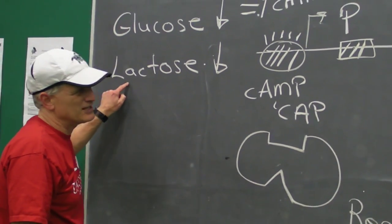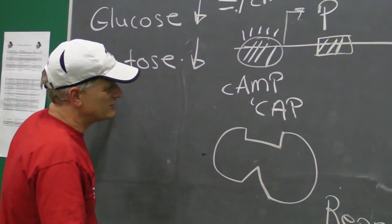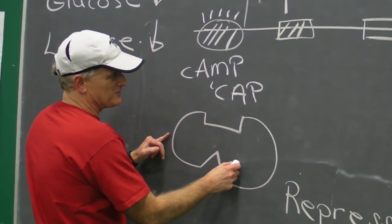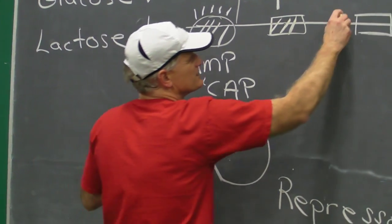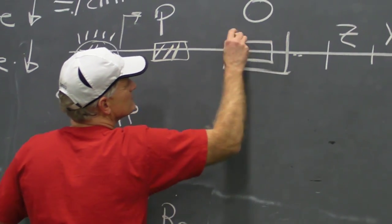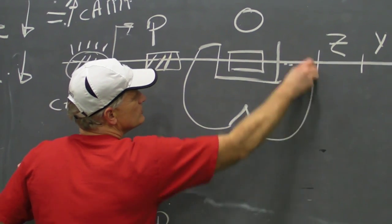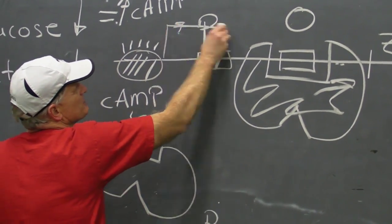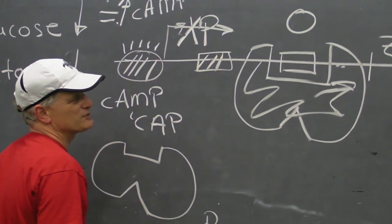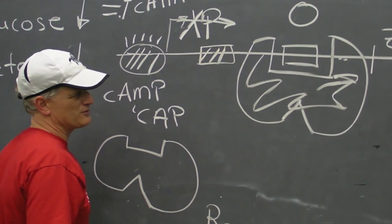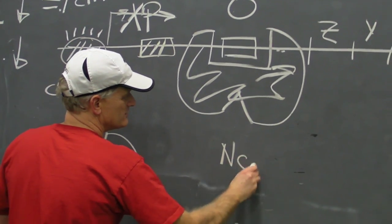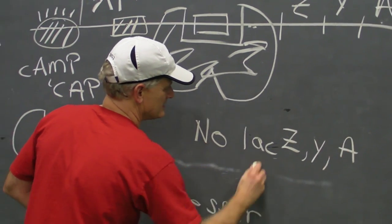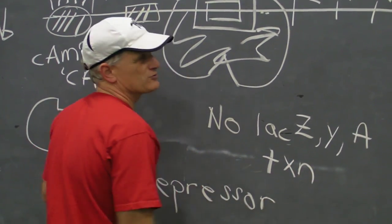Except, lactose levels are low. If lactose levels are low, the repressor looks at this configuration. This repressor is gonna bind to the operator sequence and will prevent the RNA polymerase from transcribing. Okay, so the answer to this one is no lacZ, Y, or A transcription.